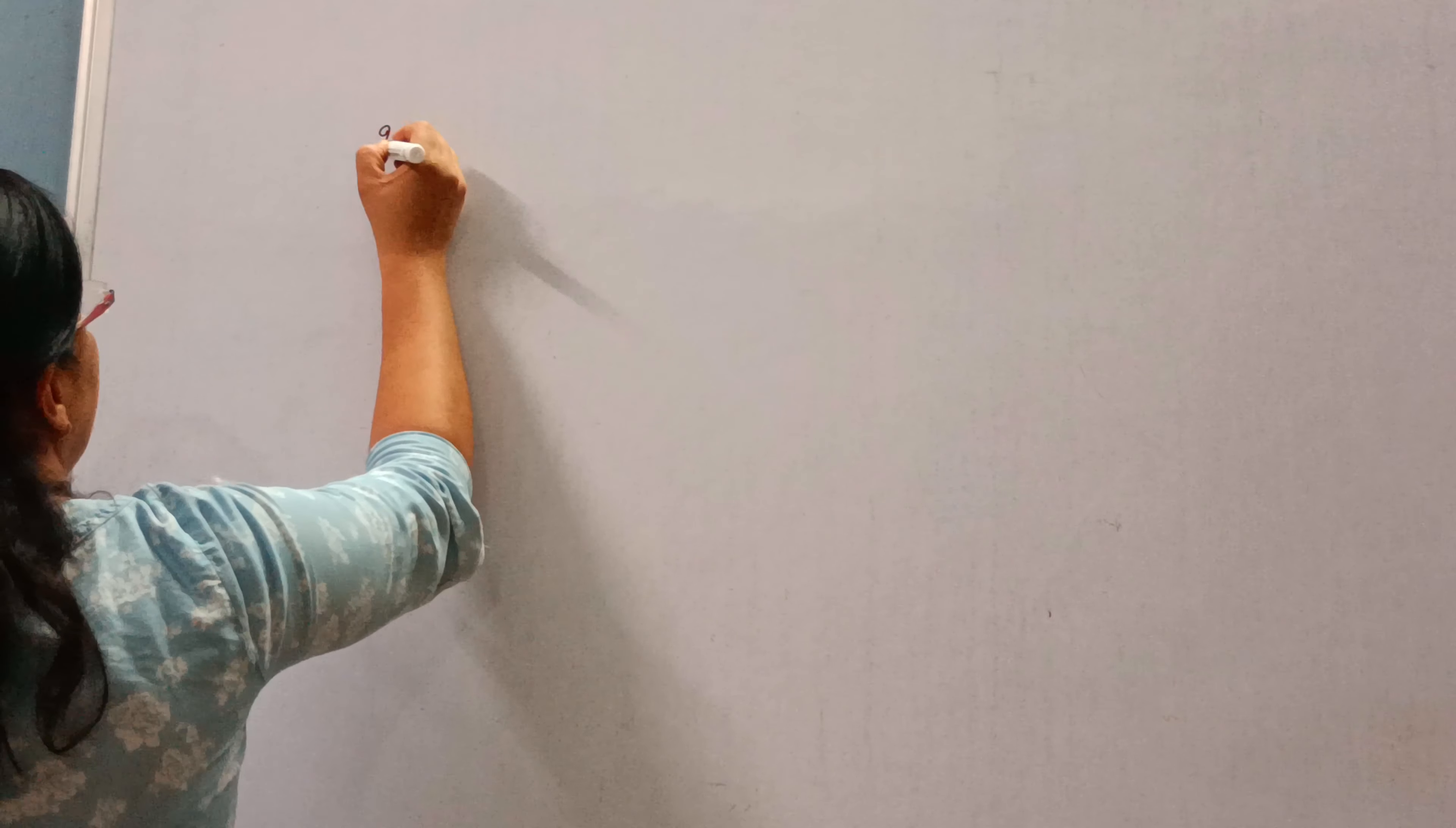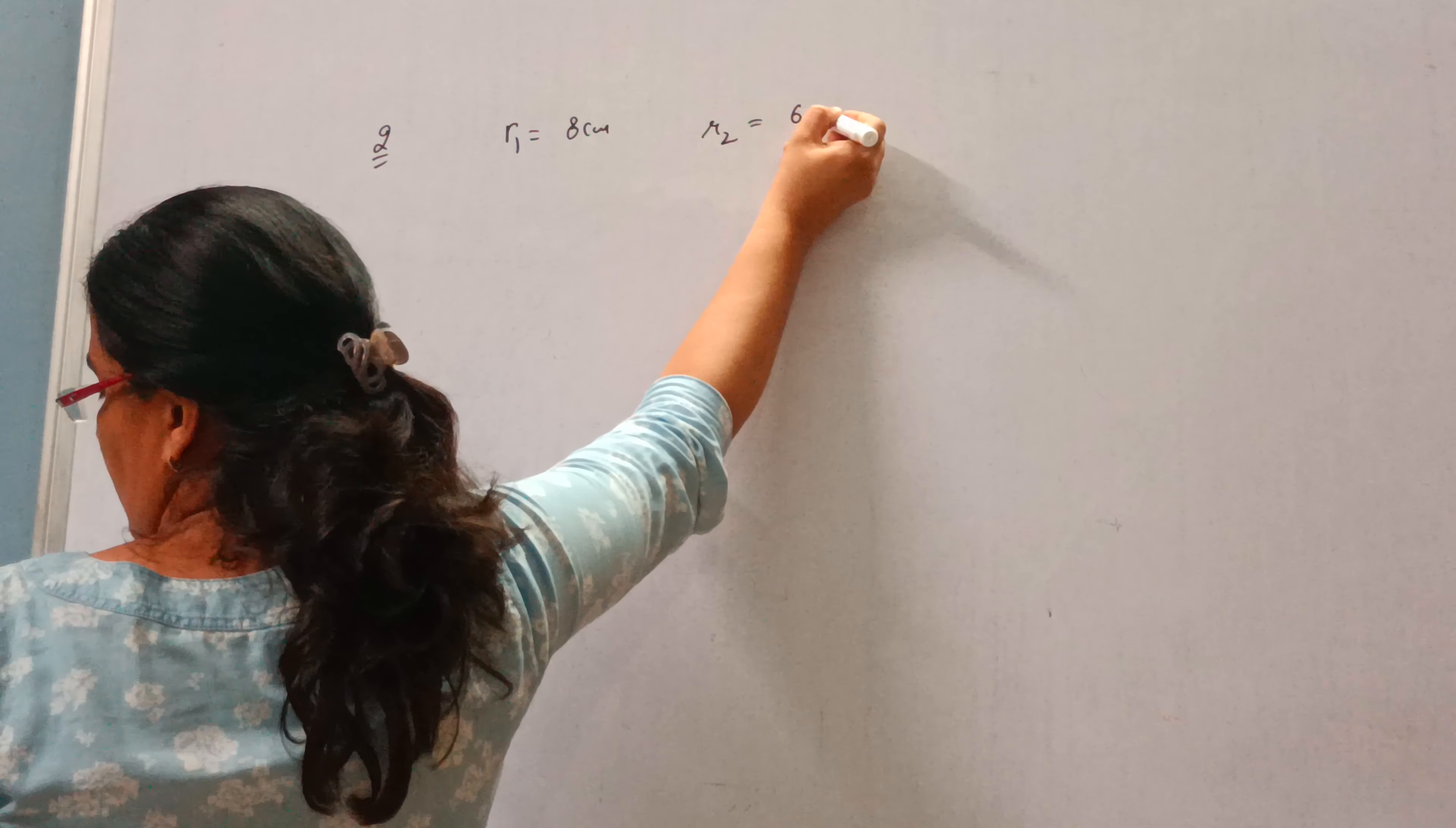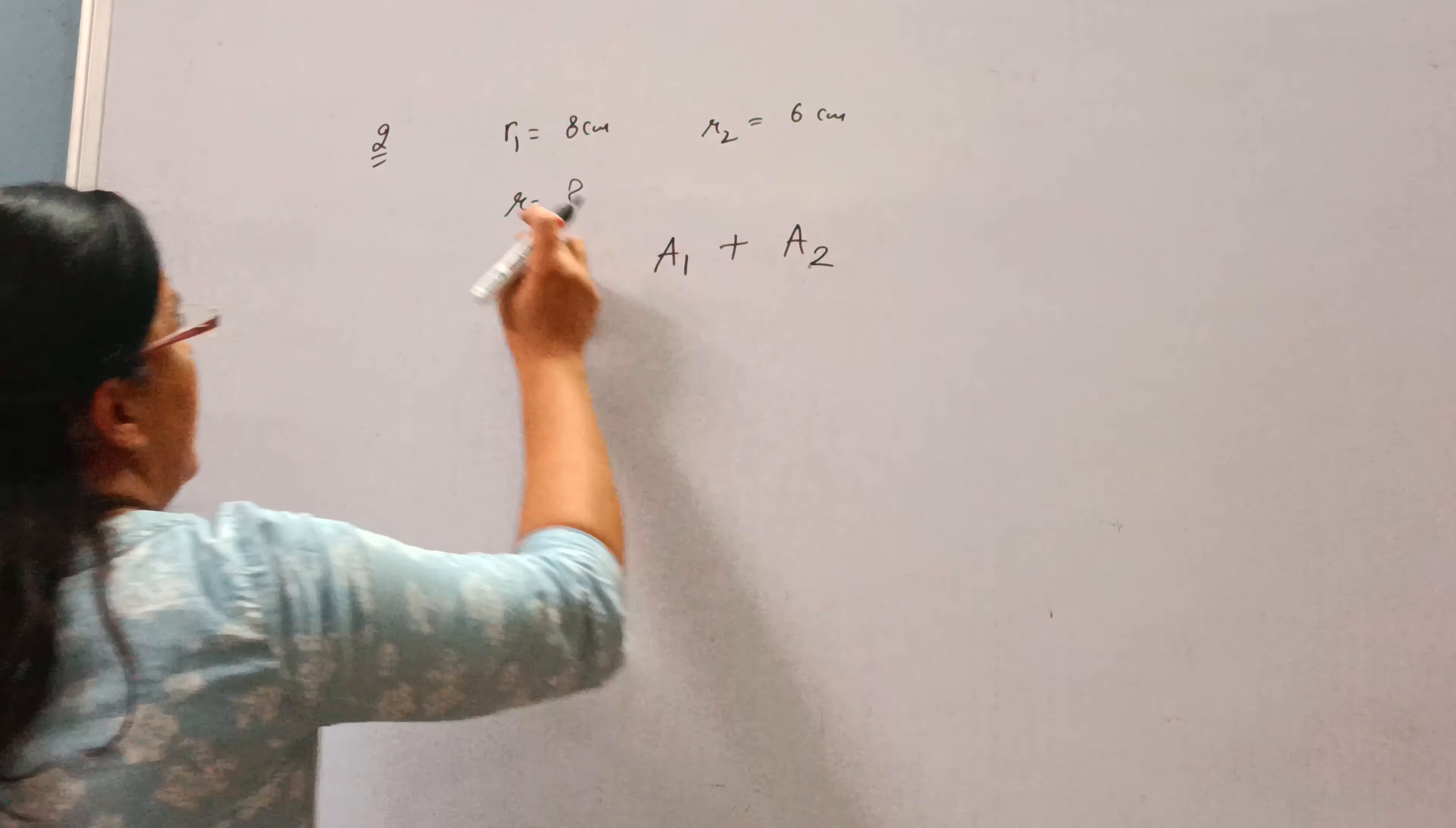Greetings everyone, today we will do question number 2 of exercise 12.2. The radii of 2 circles are 8 cm and 6 cm respectively. Find the radius of the circle having area equal to the sum of the areas of these 2 circles.